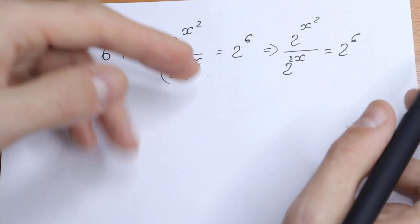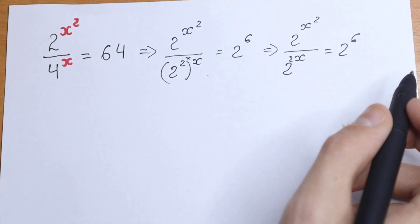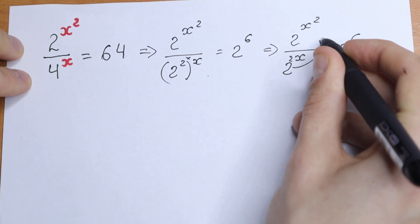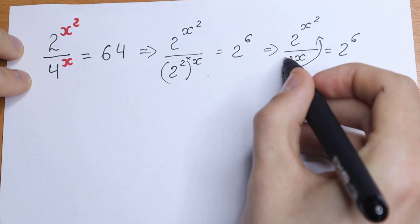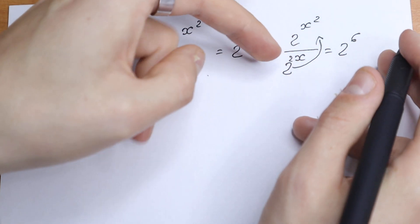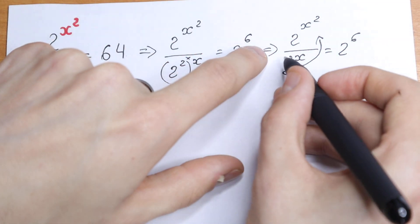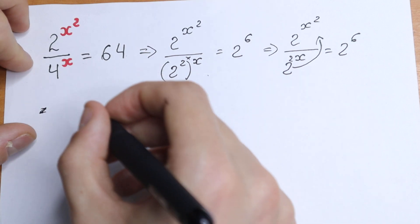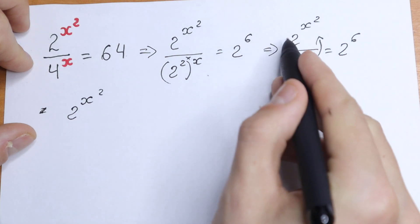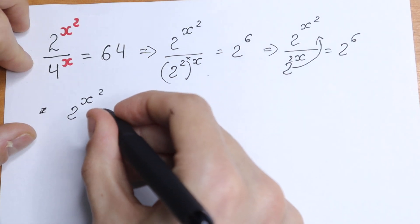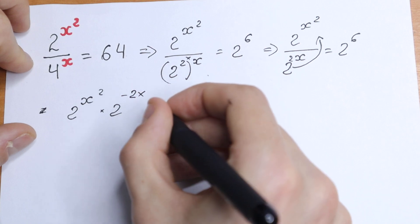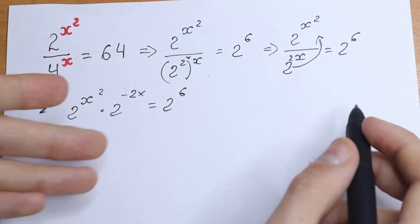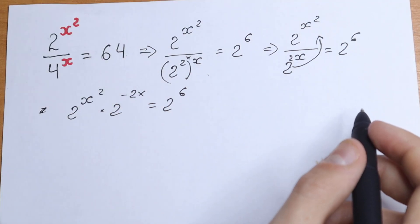So what we're going to do next? We have all the same base — that's good for us. Let's bring the 2 to the power 2x into our numerator. Instead of a plus sign we will have a minus sign. If you bring a number from the denominator to the numerator, you put a minus on its exponent. So we have 2 to the power x squared, times 2 to the power minus 2x, equal to 2 to the 6th power.